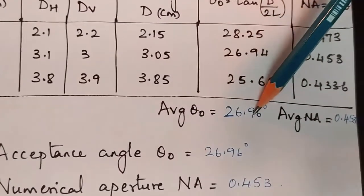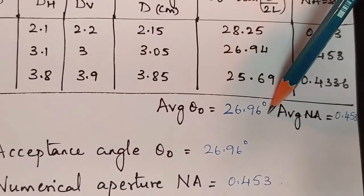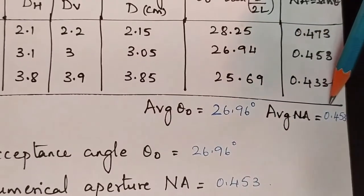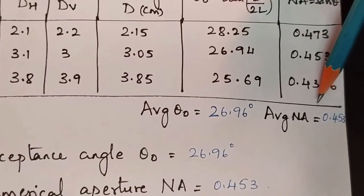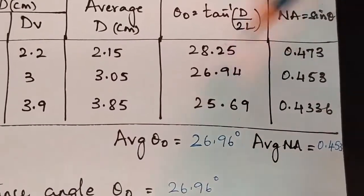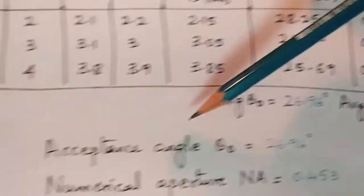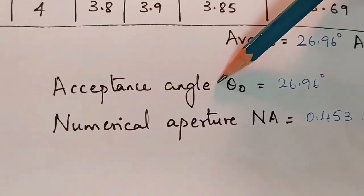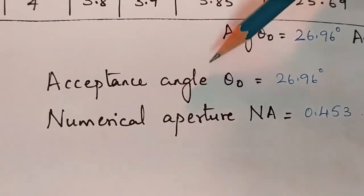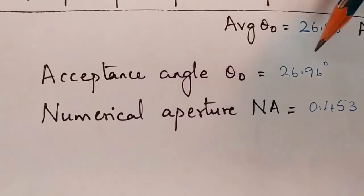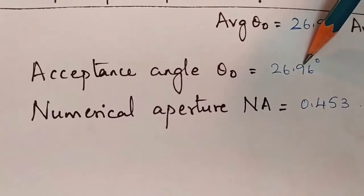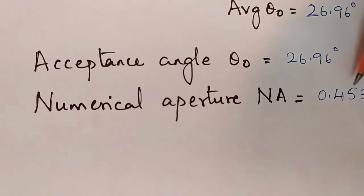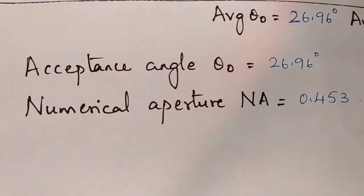The average value of acceptance angle is noted as 26.96 degrees and the average numerical aperture is 0.45. Therefore, the acceptance angle of the given optical fiber is found to be 26.96 degrees and the numerical aperture is found to be 0.453.